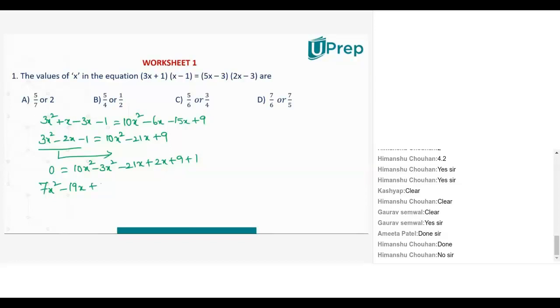10x square minus 3x square, I have 7x square, minus 21x plus 2x, minus 19x plus 9 plus 1, that is plus 10 equal to 0. That is my question. Now you solve it.